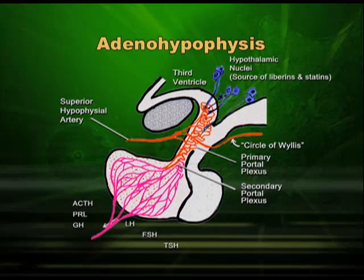The adenohypophysis, or anterior lobe, is the source of six important hormones which are synthesized and secreted by the anterior lobe itself. Inside the anterior lobe, six different types of cells produce six different types of hormones. The message comes from the hypothalamus in the form of releasing factors, or in the case of prolactin, in the form of an inhibitory factor.